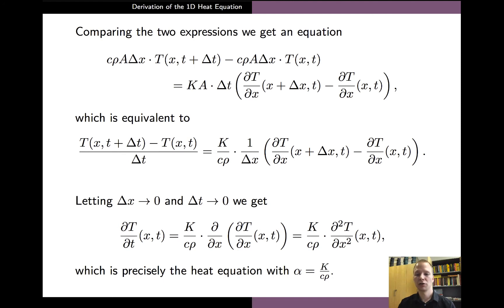And here we can also see how the constant alpha depends on the physical parameters of the material. And these are the thermal conductivity K, the specific heat capacity c, and finally the mass density rho of the material.